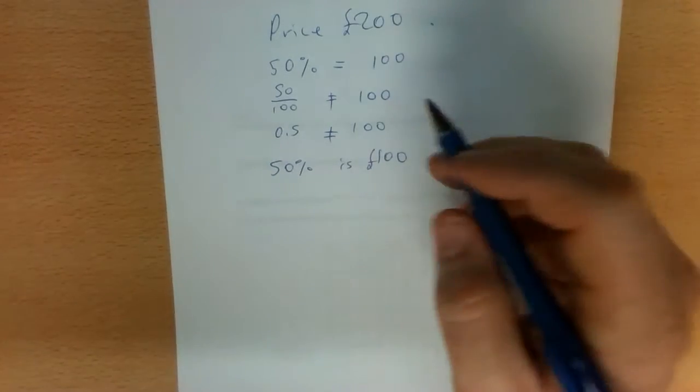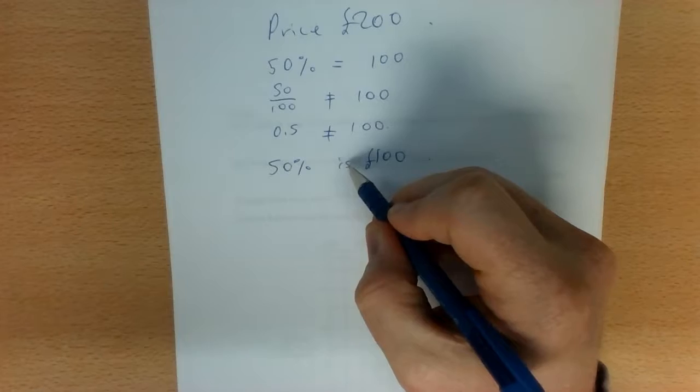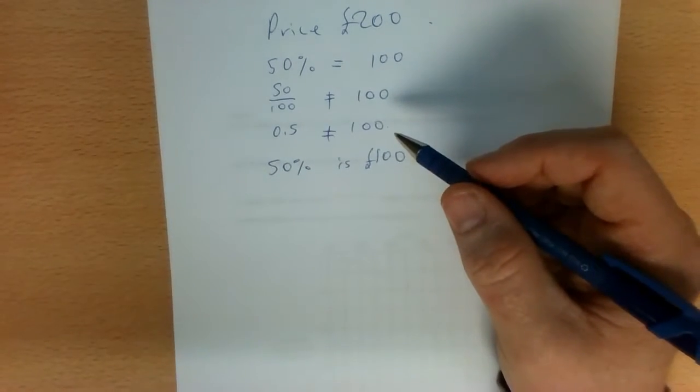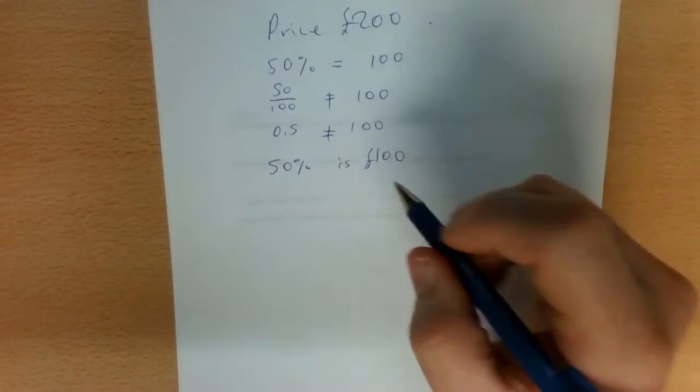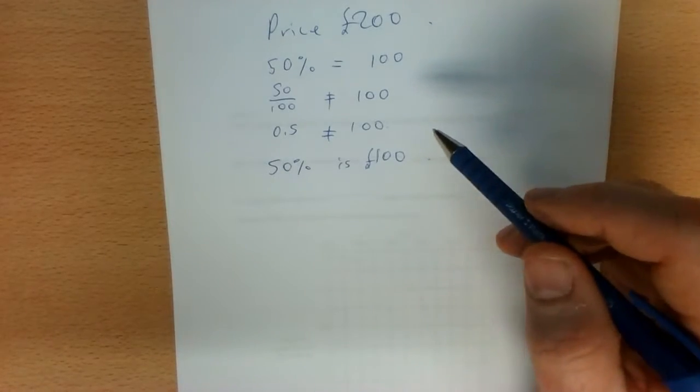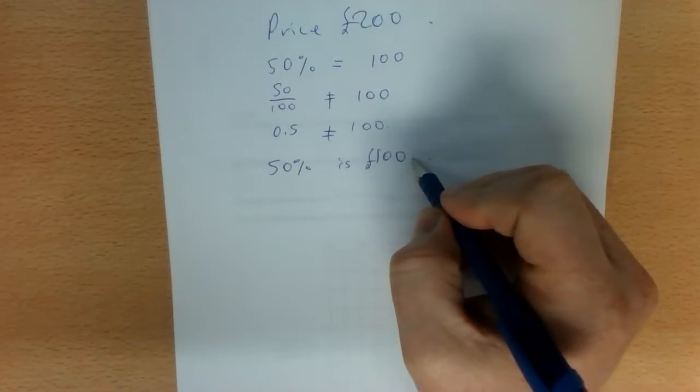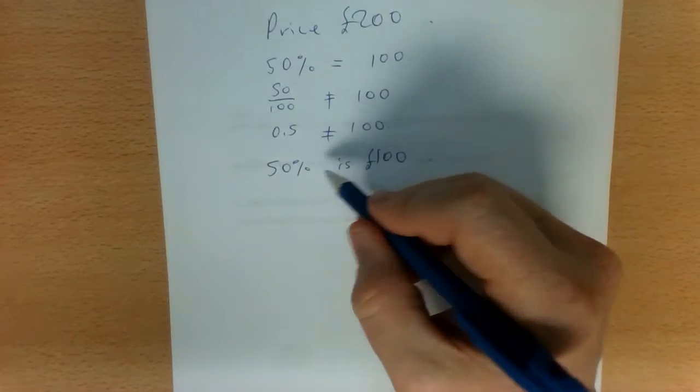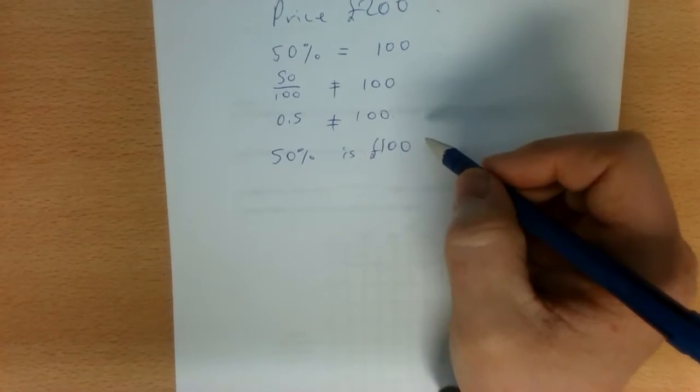And therefore, because you're not using a technical symbol, people will be more likely to forgive you for something that's not technically correct. When you write 50% is 100, people will understand that you mean 50% of the price is 100 pounds.